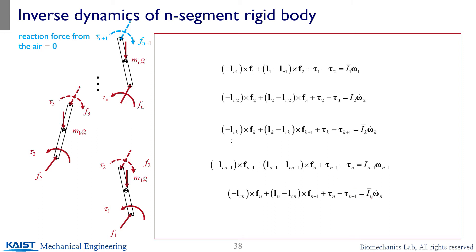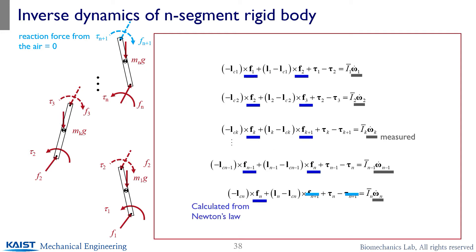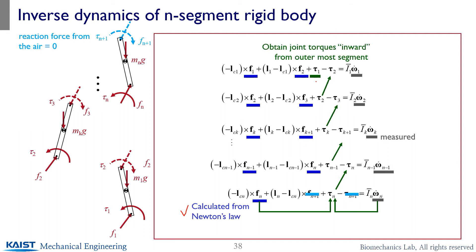The same process applies to the moment equation. You measure all the angular accelerations, and you want to find the torques generating those motions. You start with the last segment because the reaction force from the air is zero. All joint forces are already calculated from Newton's law, so from those known values you can find the torque at the outermost segment, then plug that into the previous segments, continuing until you finally calculate the ankle joint torque. That's what we call inward iteration. Pretty straightforward as long as you have good measurements.